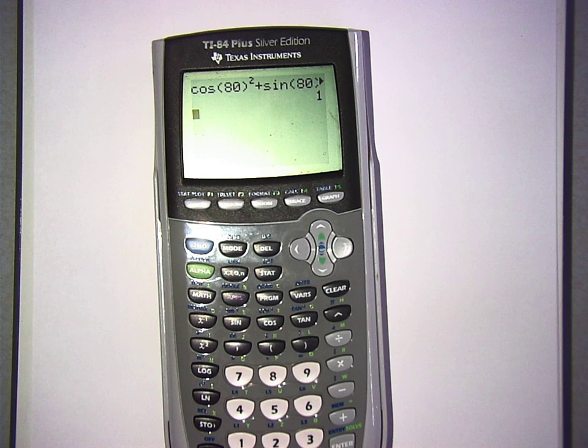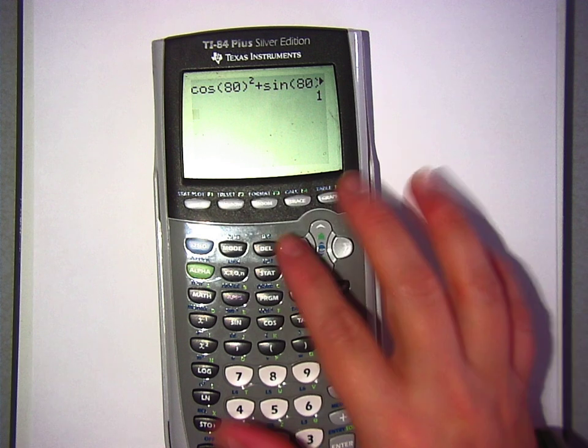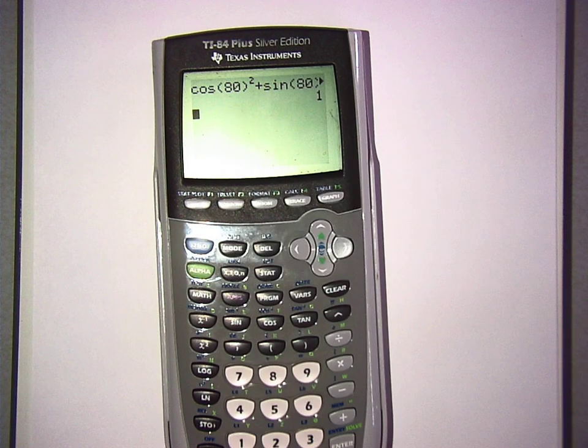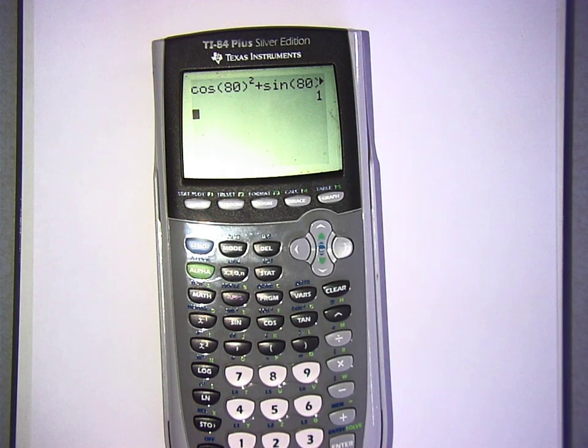What number did you guys pick? 60. 80. 45. So it was cosine 80 squared plus sine 80 squared. What did you pick? 45. 45, and it worked? Georgia, what did you pick? 70. Did it work? Yeah. Okay.